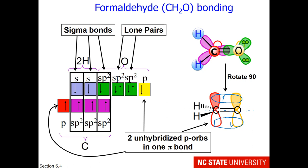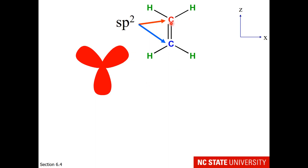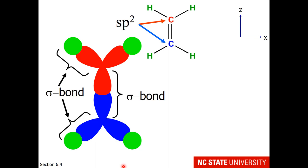Shall we try that one more time with a different molecule? How about ethylene? Each of these carbons has three electron regions, so they will be sp2 hybridized. I'm going to draw the red carbon's hybrid orbitals at 120 degrees, and the blue carbon's hybrid orbitals at 120 degrees. Now I can draw the overlaps with the hydrogen atoms. So all of these are sigma bonds.